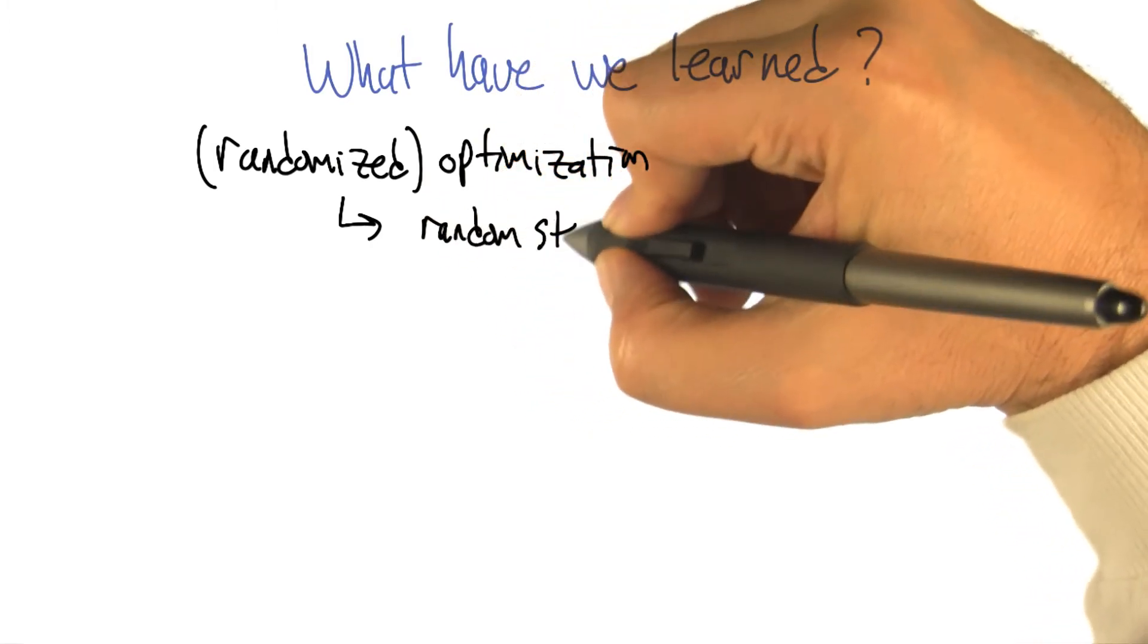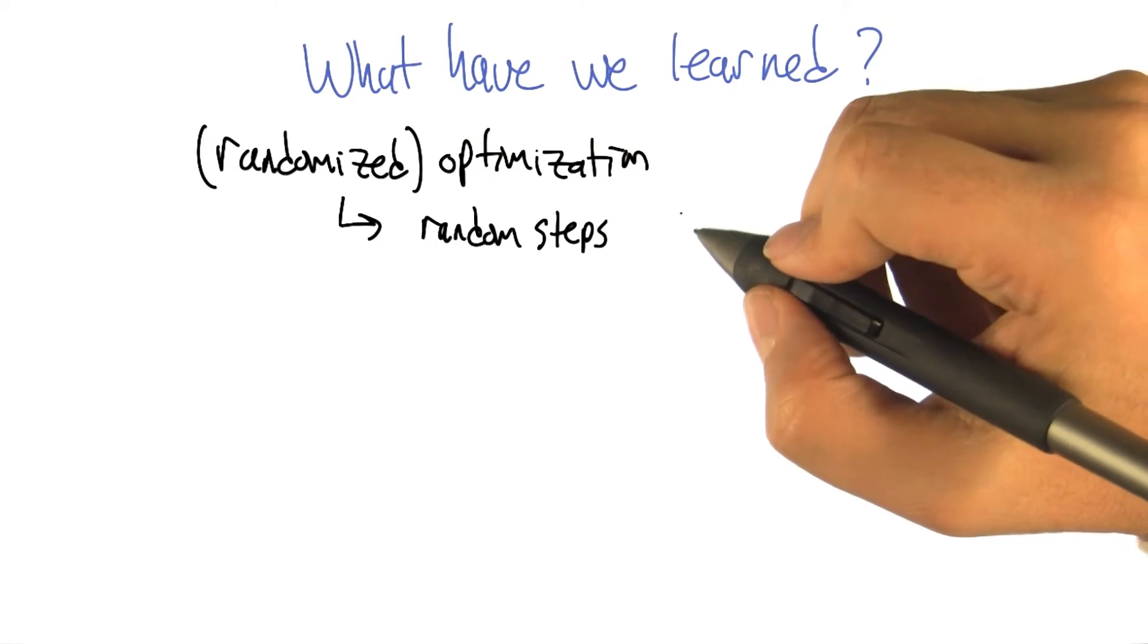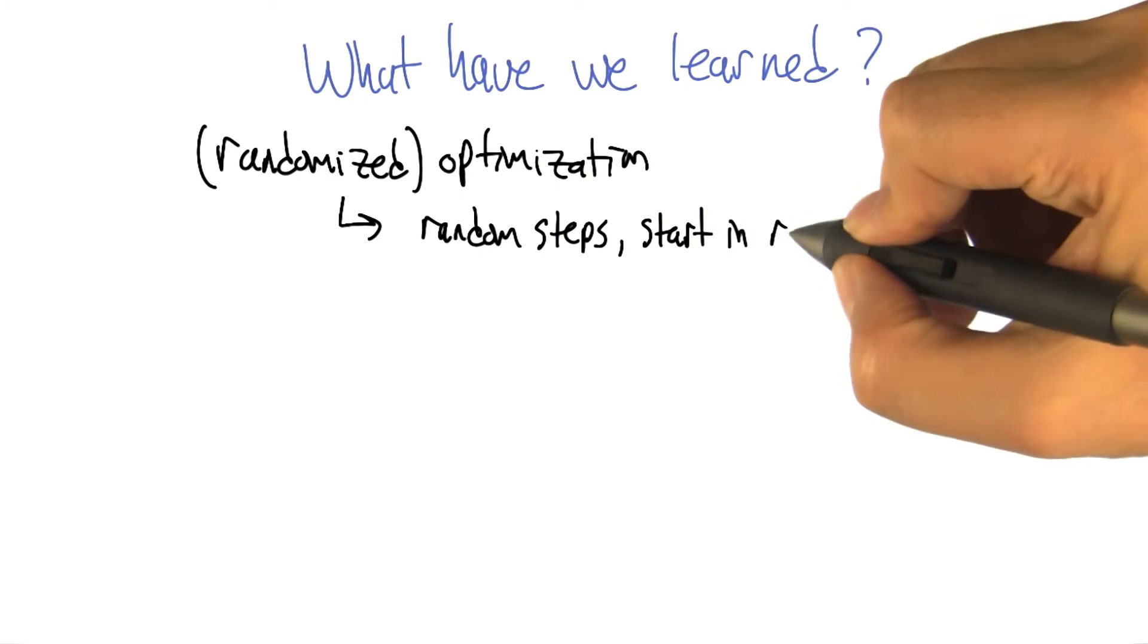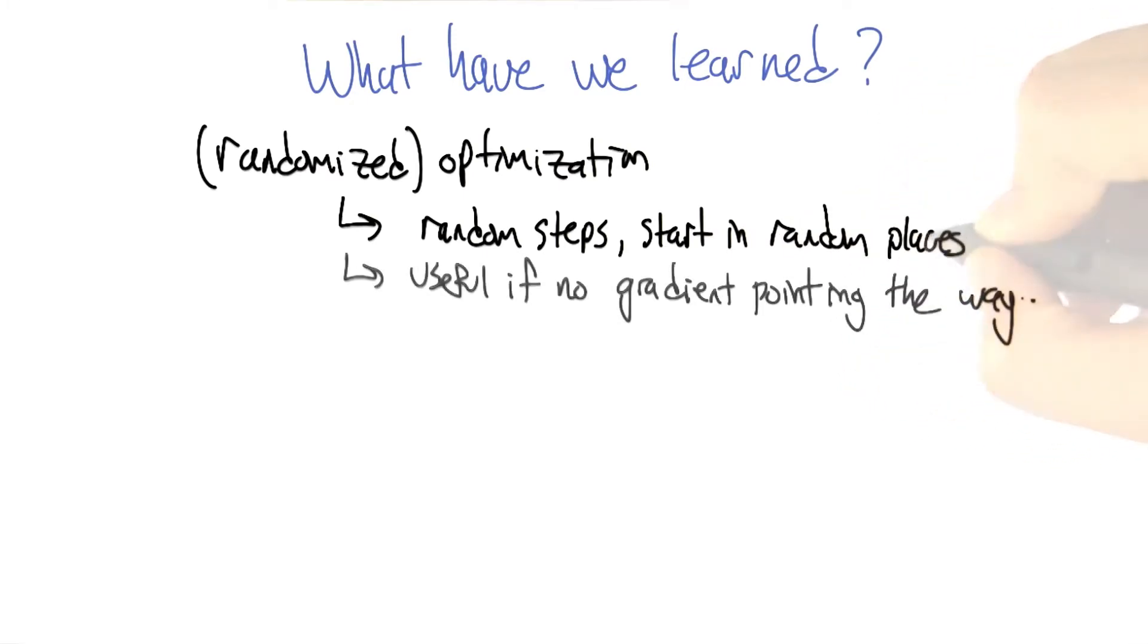Or we do random kind, well actually that's really it. You take random steps, you start off in random places. And it's a way to overcome when you can't take a natural gradient step.